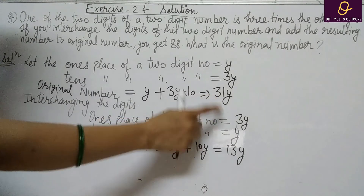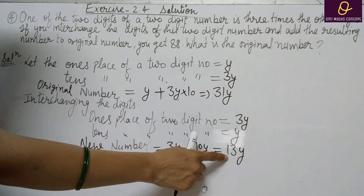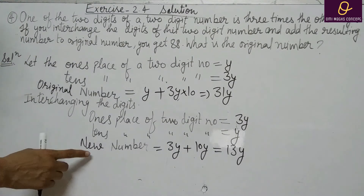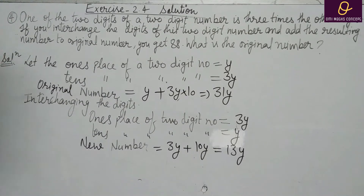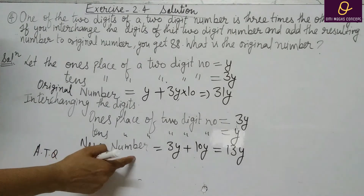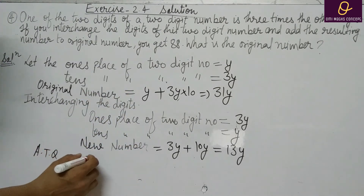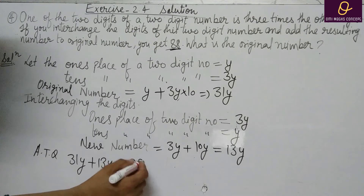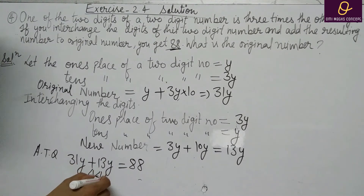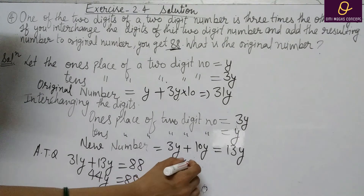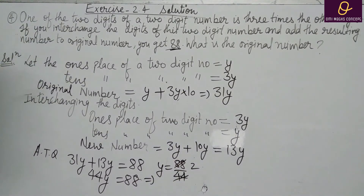इसकी digit reverse हो गई है. Question में लिखा है: अगर आप original number और new number को add कर देते हैं तो 88 मिलता है. According to question: 31y plus 13y is equal to 88. इनको add करेंगे: 44y is equal to 88. y equal to 88 by 44 — y की value आई 2.